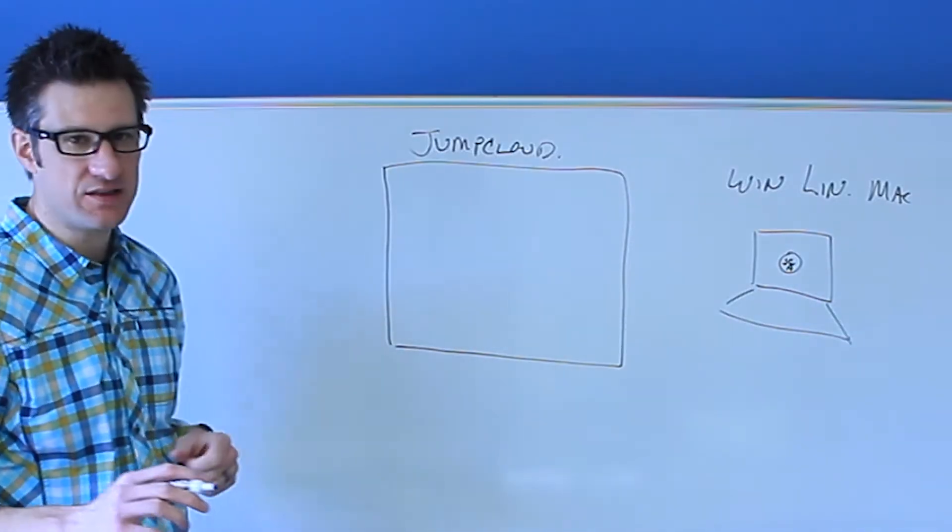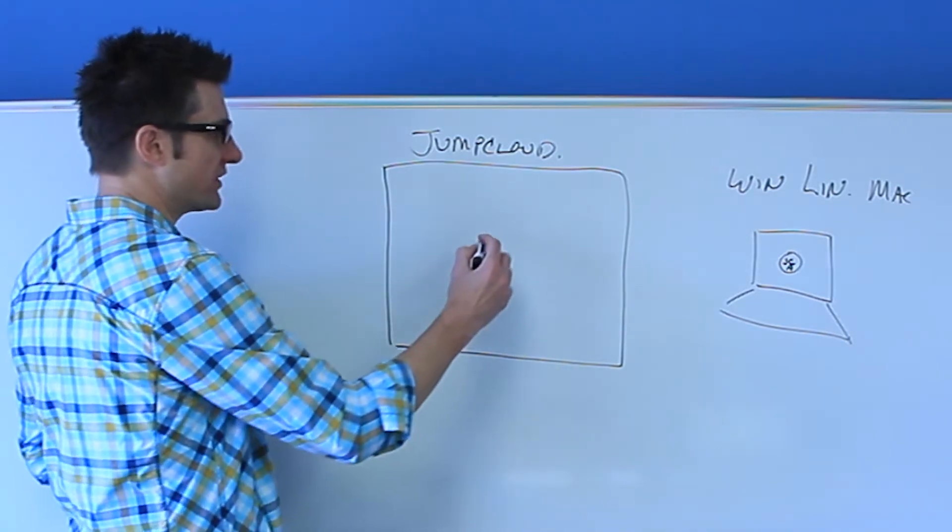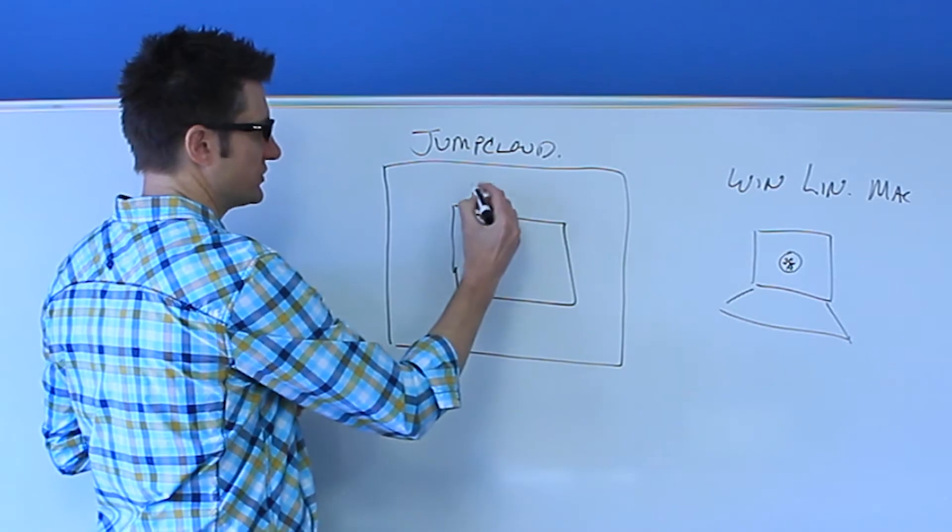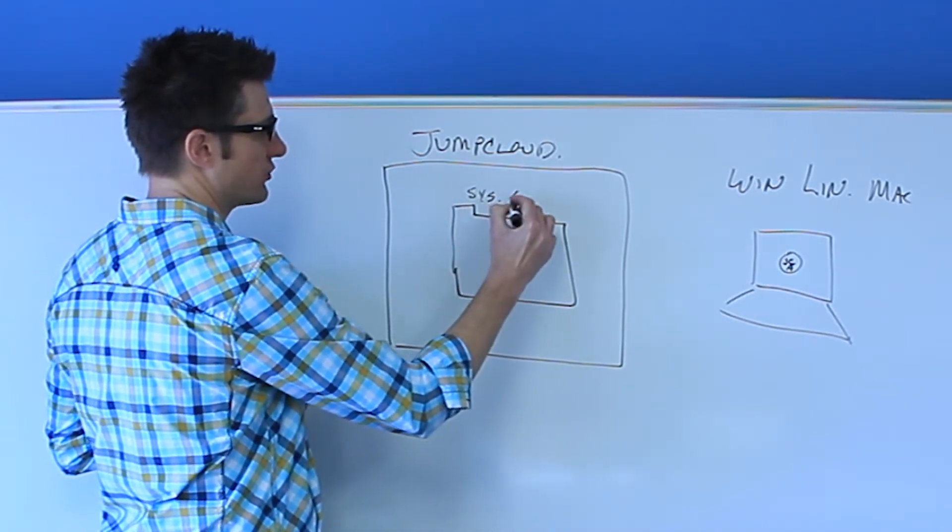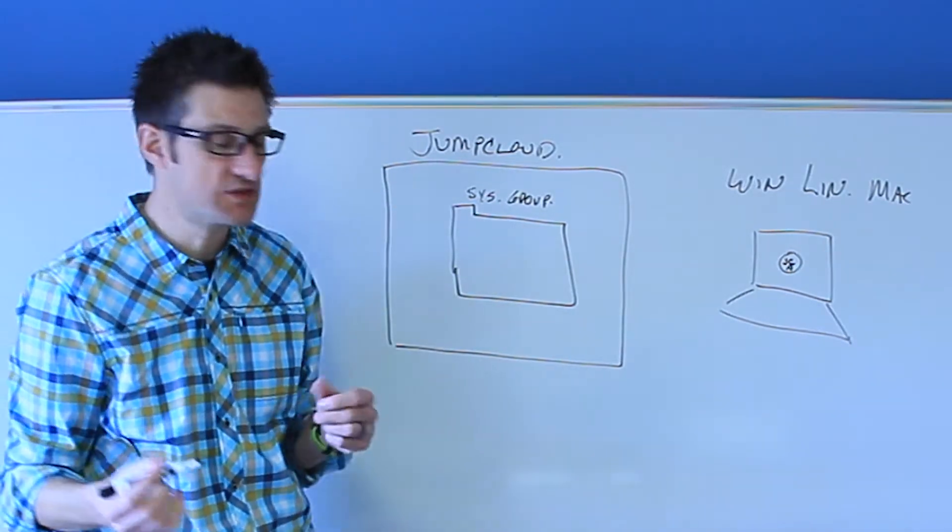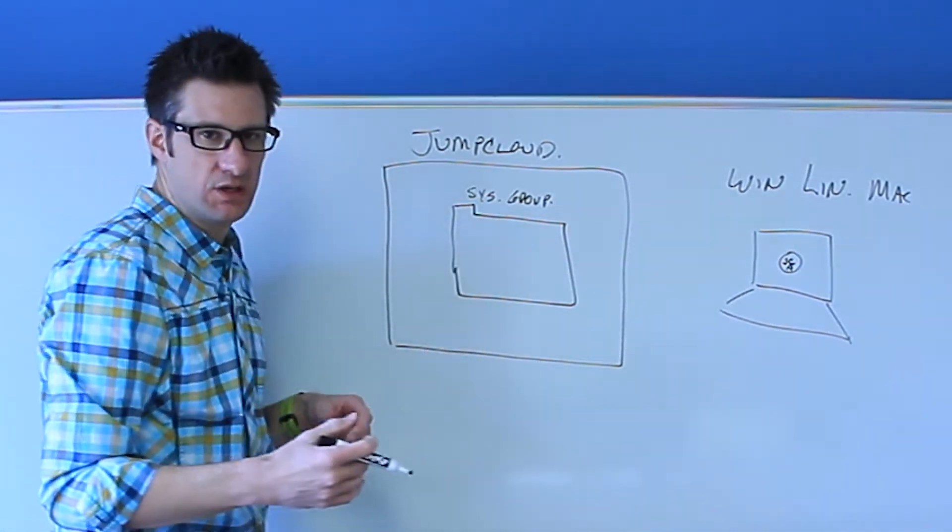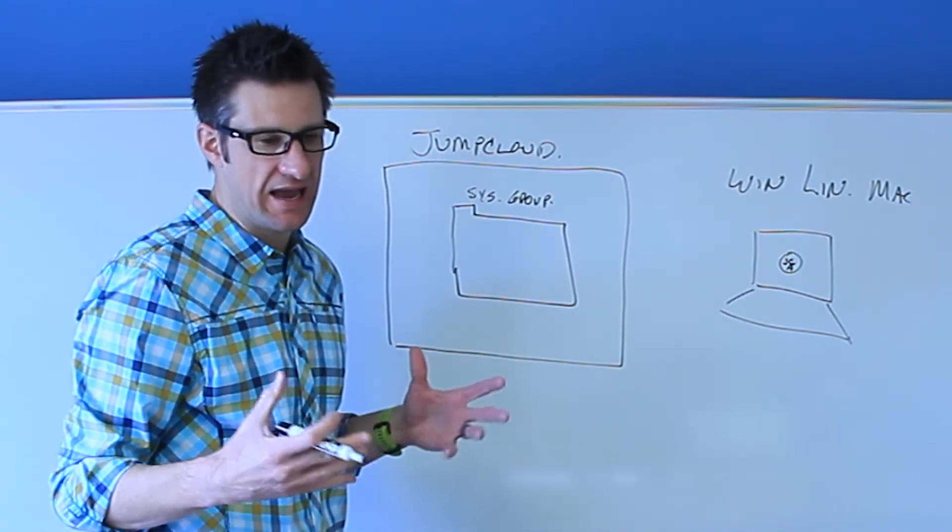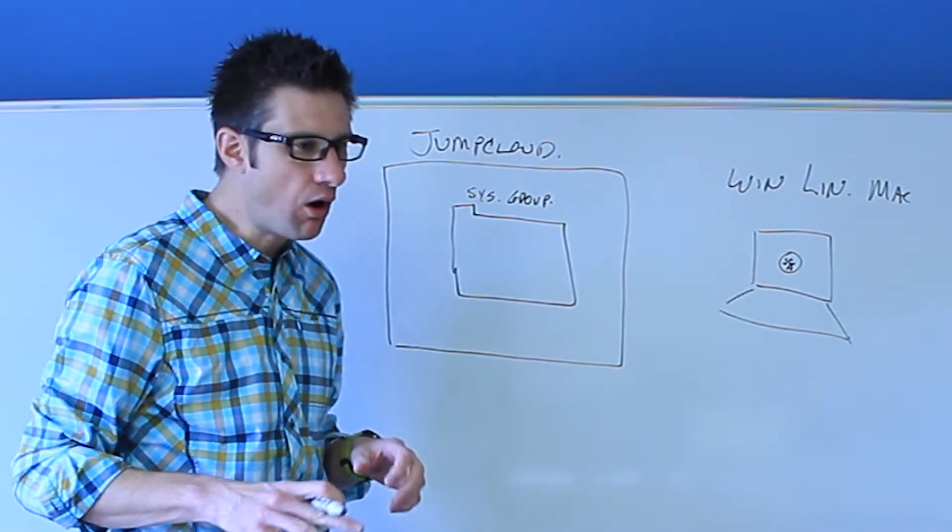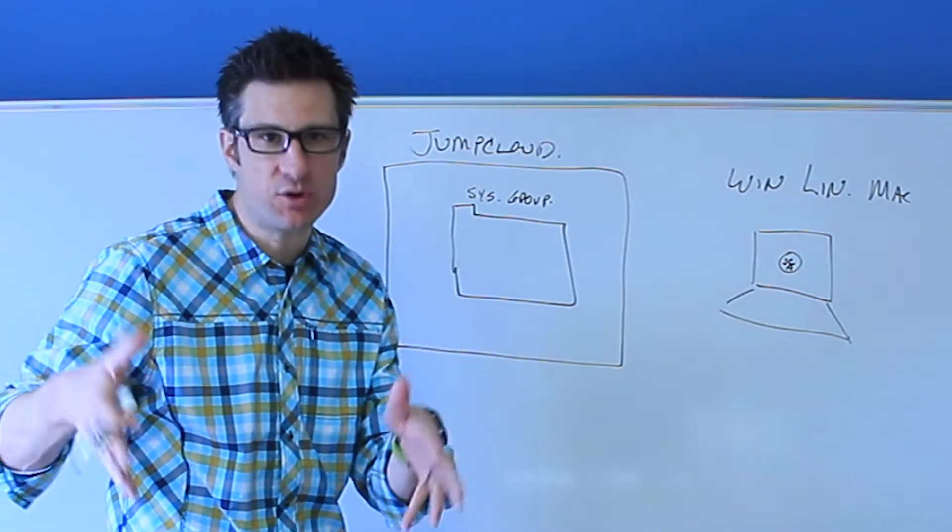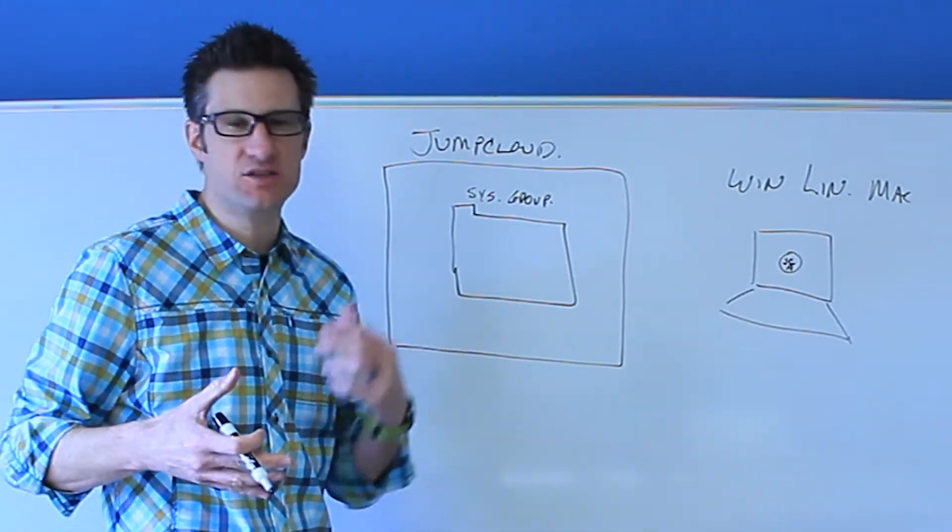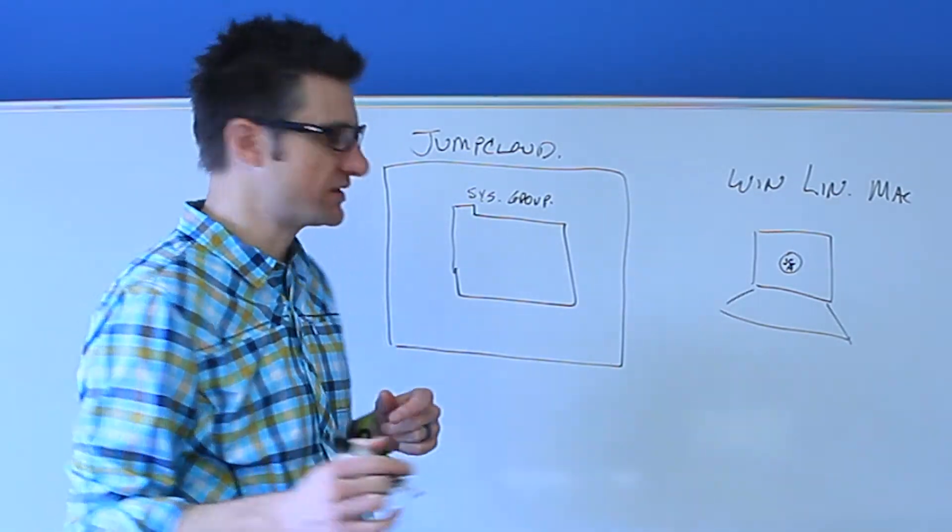Inside the JumpCloud platform, we have the concept of a system group. This is an arbitrary object, a collection of other systems that you'll add. So inside the system group, you could conceptually make a group called all Mac systems, or all salesperson systems. You can have a package or bundle of Windows and Mac systems. It can be completely cross OS as well.